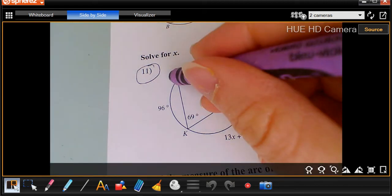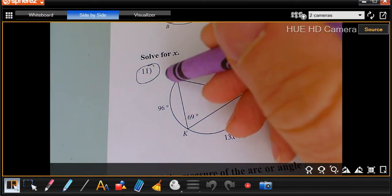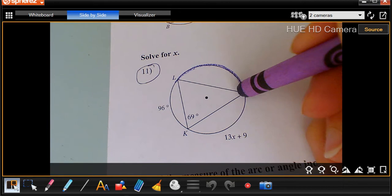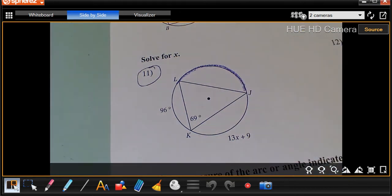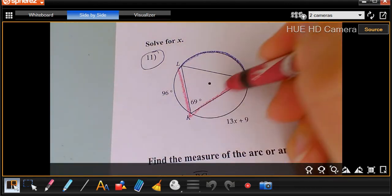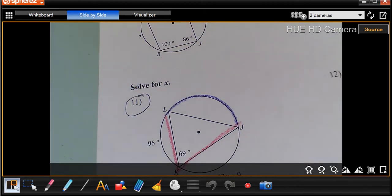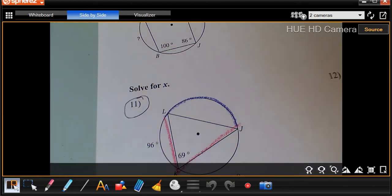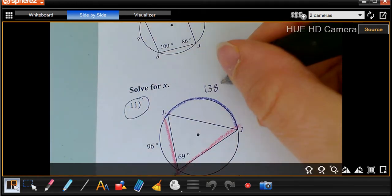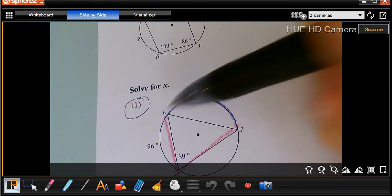So the first thing I'm going to do right here is if we're looking at KJ, that goes with this red angle I'm drawing in, 69. So that purple arc is going to be twice 69. So 69 times 2 gives me 138, because arcs are twice their angles.